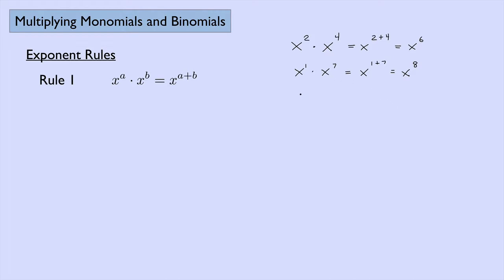Or maybe we have something like a squared b times a times b to the fourth. In this case we're allowed to move things around using the associative rule. Group together the a's: we have an a squared and an a to the first, so that's a to the third. Then we have all of our b terms: a b to the first and a b to the fourth, that's b to the fifth.